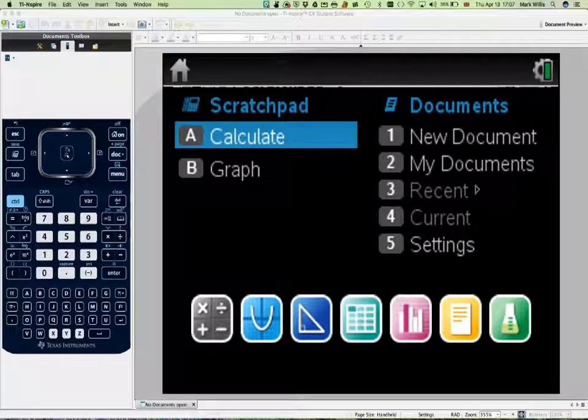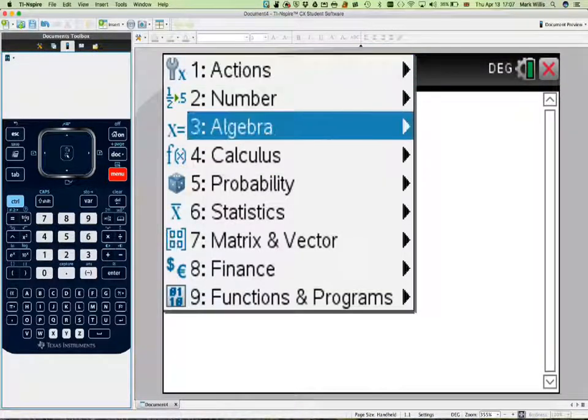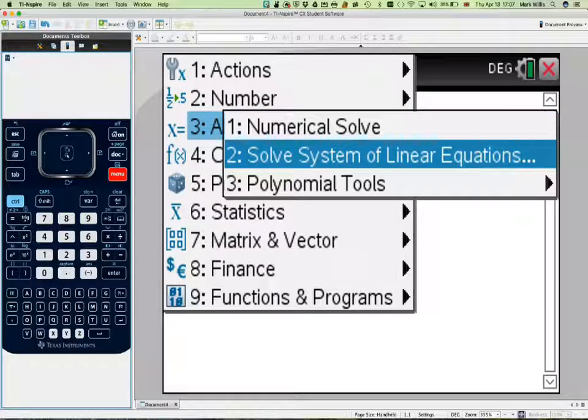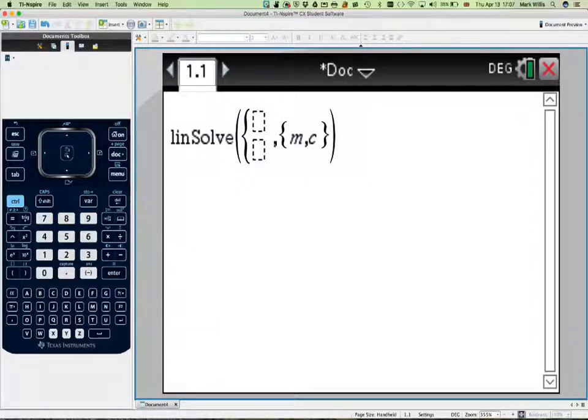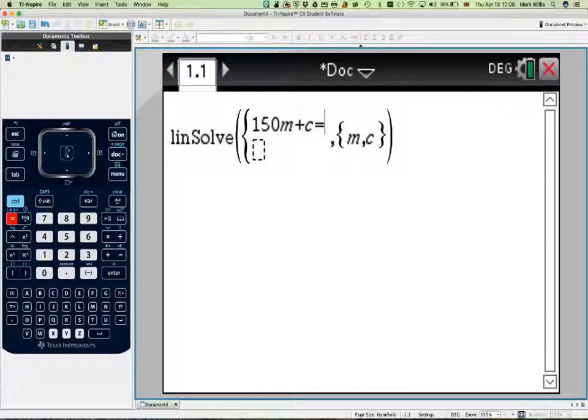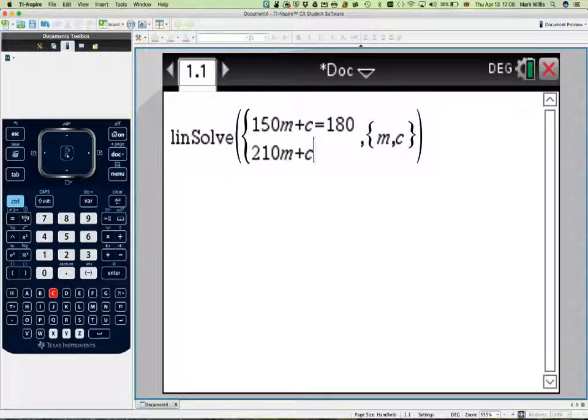Go into the GDC, go into a calculation mode, and go to menu number 3, algebra, and then to number 2, solve system of linear equations. Select that, two unknowns, change this to m and this to C, and press OK. Now all we need to do is write in 150m plus C equals 180, and then underneath we write in 210m plus C equals 181.5.